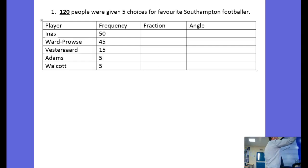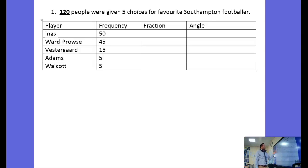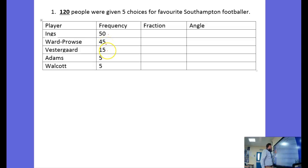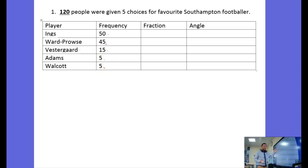So if we've got some data, here we have a survey. 120 people were given five choices of their favorite Southampton footballer. 50 people said Danny Ings, 45 people said James Ward-Prowse, 15 Yannick Vestergaard, 5 Chatham's, 5 Theo Walcott. So there's our data.